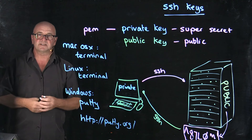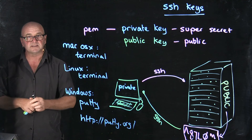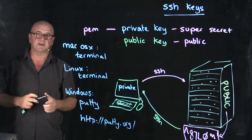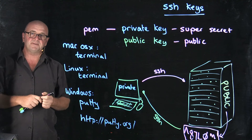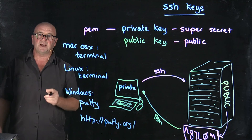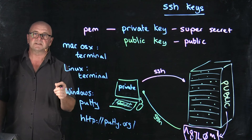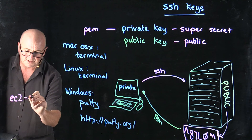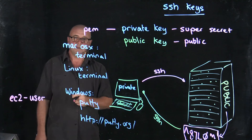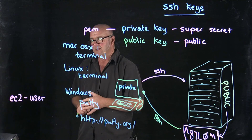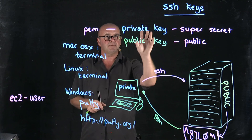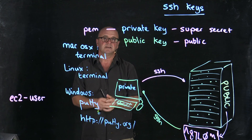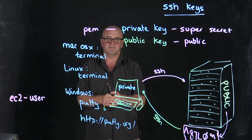The only other thing you need to access your AMI instances on Amazon Web Services is your username. For the Amazon instances we're using, you'll log in as user EC2-user. You don't need a password because you've got your keys. With all of this, you can connect to your Amazon instance that you've just booted up.